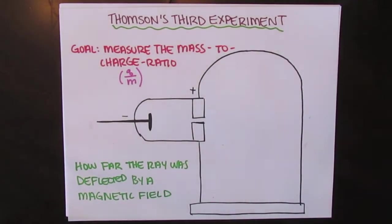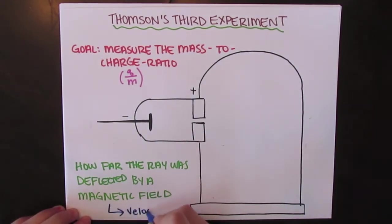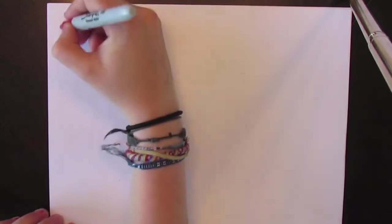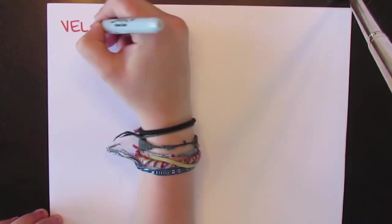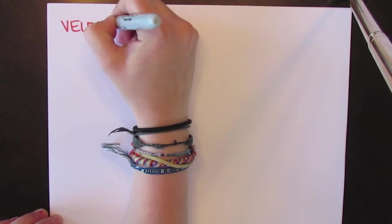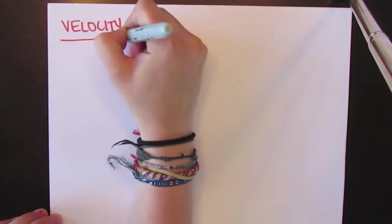In his further examination of the mass-to-charge ratio, Thomson needed to calculate the velocity at which the electron was traveling. This posed as a problem, seeing as how he did not know the mass of the electrons or their charge. However, he found the electron's velocity using his previous knowledge of physics.